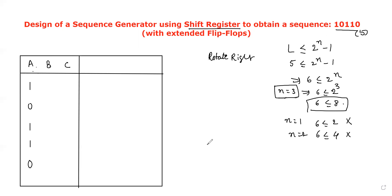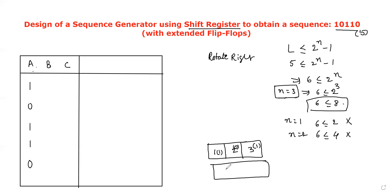What is meant by rotate-right-shift operation? Let us take one example. This is the shift register — a combination of flip-flops, a group of flip-flops interconnected. In this register, the first flip-flop has one, the second flip-flop has zero, and the third flip-flop has one. Using the right-shift operation, the resultant should be: this one moves to this place, this zero moves to this place, and this one moves to the first flip-flop because we are using the rotate-right-shift operation.